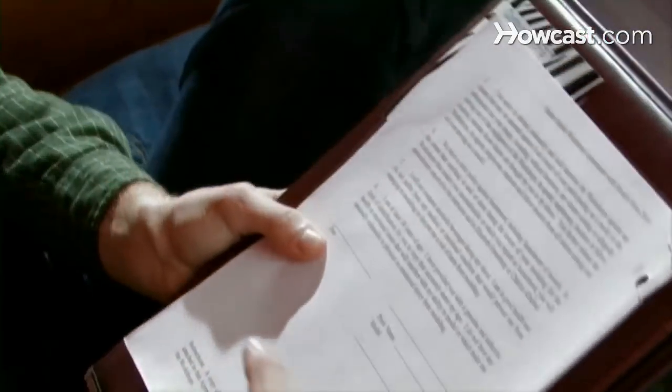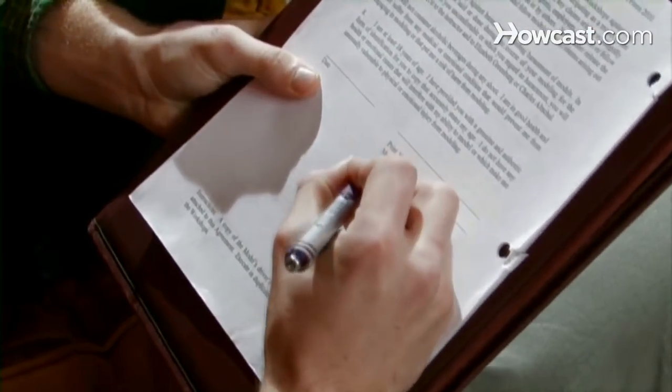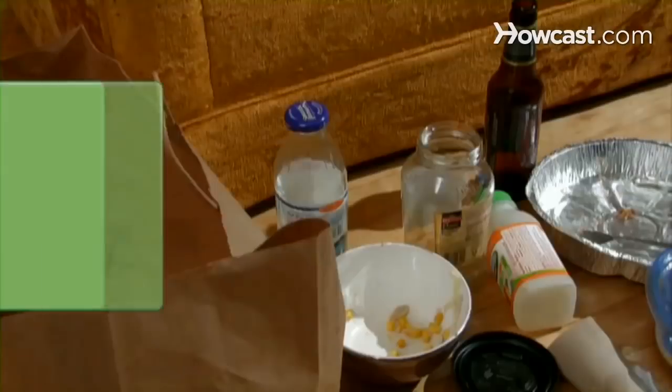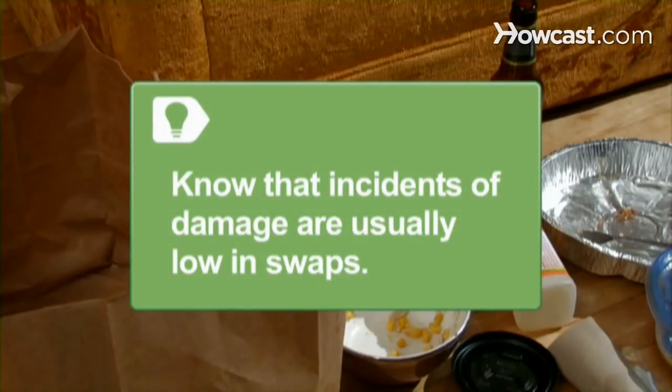Step 6: Draw up a contract outlining what you and your visitor are responsible for during the swap, who is responsible for damage, and any other details of the exchange, including how you will swap keys. Have both parties sign the contract. Rest easier knowing that incidents of damage are usually low in swaps because the other party is just as worried about having their property damaged or stolen.